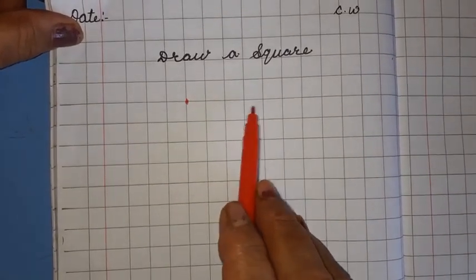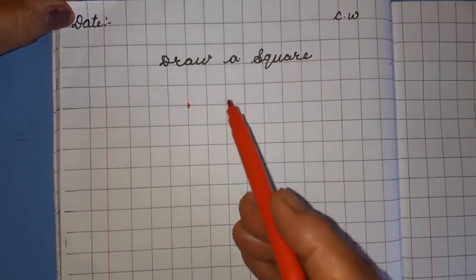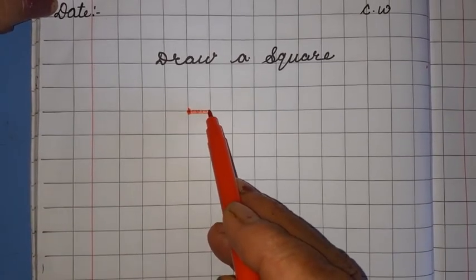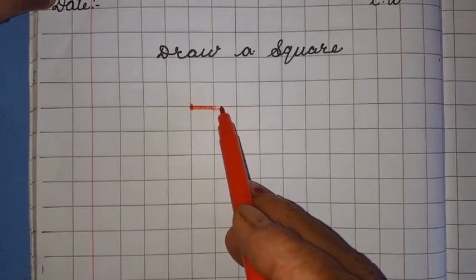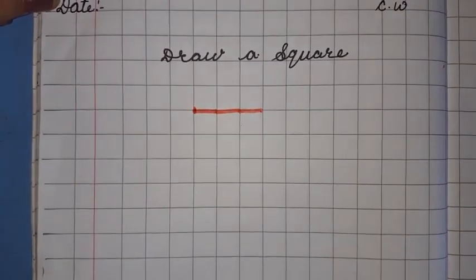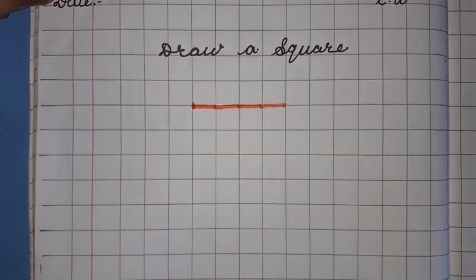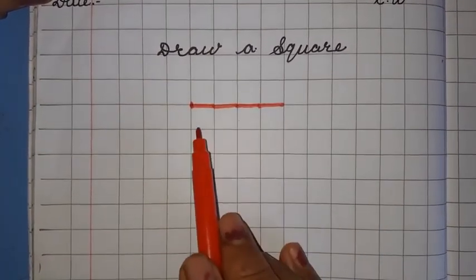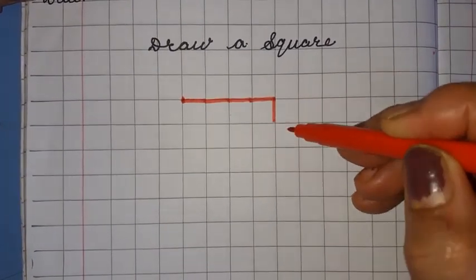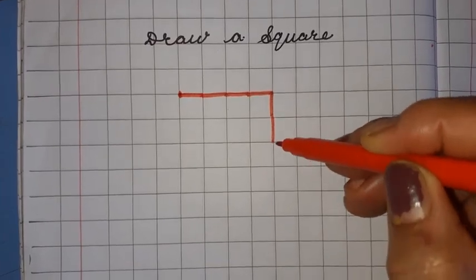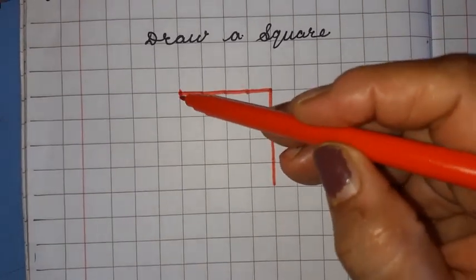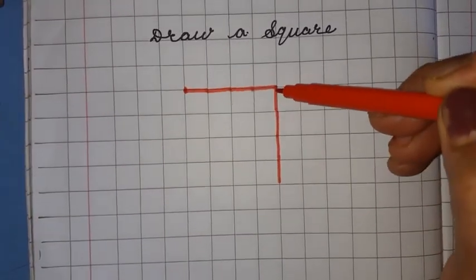I am going to teach you how to draw the line. First, put your point here and make a line in one box. One box is done, then go to the next box, then the third box, and touch the fourth. I am going to take four boxes downward also — touch this box, this box, three, and four.